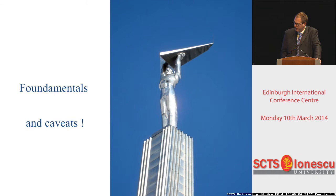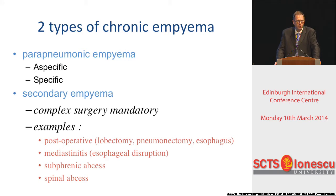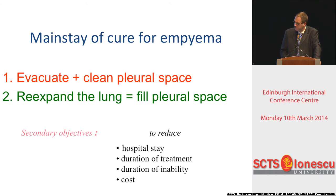If we go back to the pleural space and to chronic empyema, there again we have two different types. The first one is associated with more or less usual pneumonia, and the second one are the categories of secondary empyema. The mainstays of treatment are, of course, exactly the same: we need to clean and evacuate the pleural space, and we need to re-expand the lung, if there is some lung left, or fill the pleural space by some other procedure.